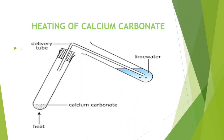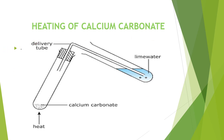Next is heating of calcium carbonate. When we heat calcium carbonate, upon heating it decomposes to form calcium oxide and carbon dioxide. When we pass the carbon dioxide gas formed through lime water, the lime water turns milky. So, heating of calcium carbonate is a chemical change, and the reaction of carbon dioxide with lime water is also a chemical change.